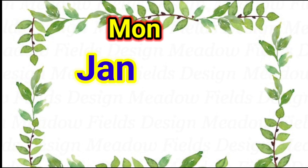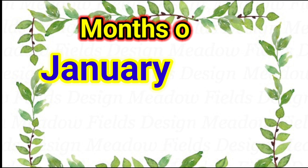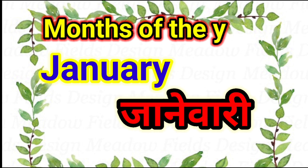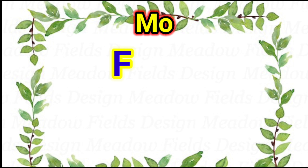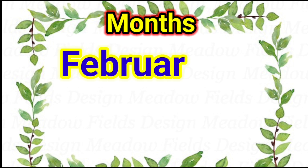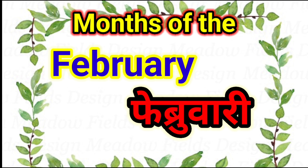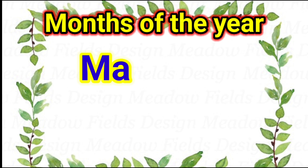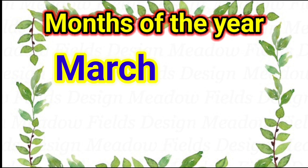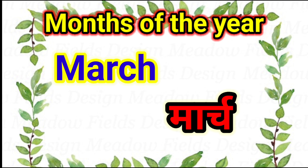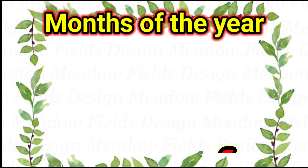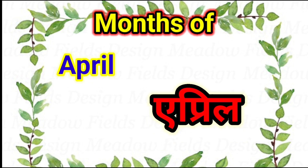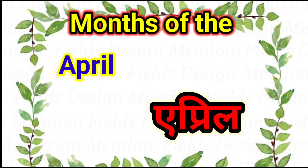J-A-N-U-A-R-Y, January — January is the first month of the year. F-E-B-R-U-A-R-Y, February — February is the second month of the year. M-A-R-C-H, March — March is the third month of the year. A-P-R-I-L, April — April is the fourth month of the year.